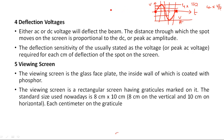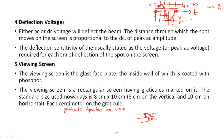Graticules are nothing but the horizontal and vertical lines drawn on the CRT screen. Without graticules, no one can measure the time period and voltage of a waveform, because the divisions on the CRO front panel correspond to the graticule lines. Each graticule specifies one centimeter on the screen, both horizontally and vertically. The standard CRT size is 8 centimeters by 10 centimeters. This concludes the topic of CRT types and features.